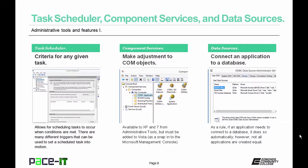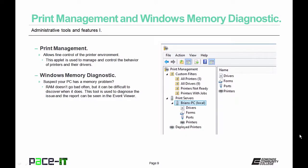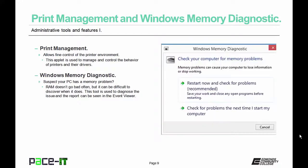Data sources connect an application to a database — as a rule it happens automatically, but not all applications are created equally and may need assistance from this applet. The Print Management applet is used to manage and control the behavior of printers and their drivers, and is often a great applet for managing networked printers. RAM doesn't go bad often, but when it does it can be difficult to diagnose — that's where Windows Memory Diagnostic comes in. This tool is used to diagnose the issue, and the report can be seen in Event Viewer.